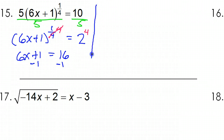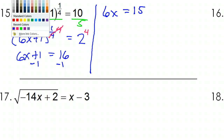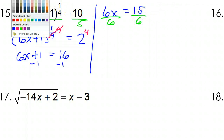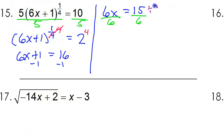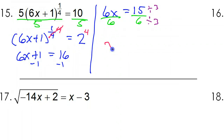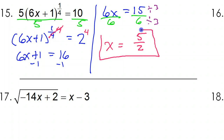So that will give us 6x is equal to 15. Then you want to divide both sides by 6. This is going to reduce a little bit — both of these are divisible by 3. So that's going to give us x is equal to 5/2, and that is the answer to number 15.